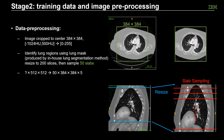Moving next to stage 2. In stage 2, we are dealing with volumetric CT images. The images were first cropped to the center 384 by 384 with value mapping, same as stage 1. We then identify lung regions using a lung mask produced by our in-house lung segmentation method. The identified lung regions were further resized to 200 slices. We then sample 50 image slabs from it. In the end, we are dealing with data with size 50 by 384 by 384 by 5.